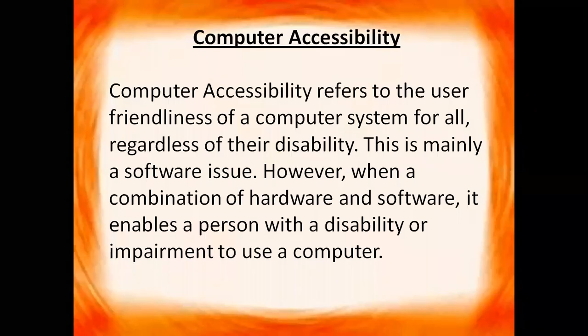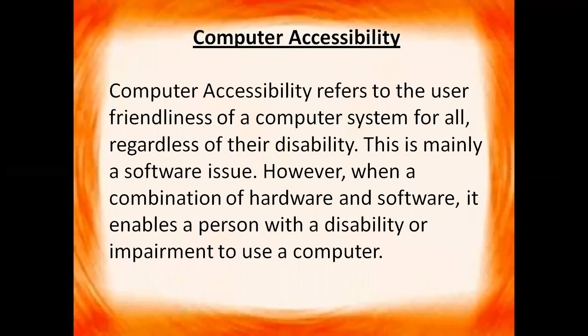Hello children. In this video we will get to know about the various accessibility options given by the computer. Now what is computer accessibility? Computer accessibility refers to the user-friendliness of a computer system for all, regardless of their disability. This is mainly a software issue; however, when a combination of hardware and software, it enables the person with a disability or impairment to use a computer.